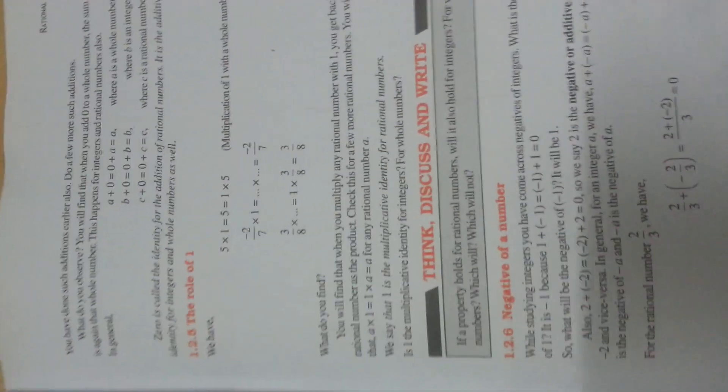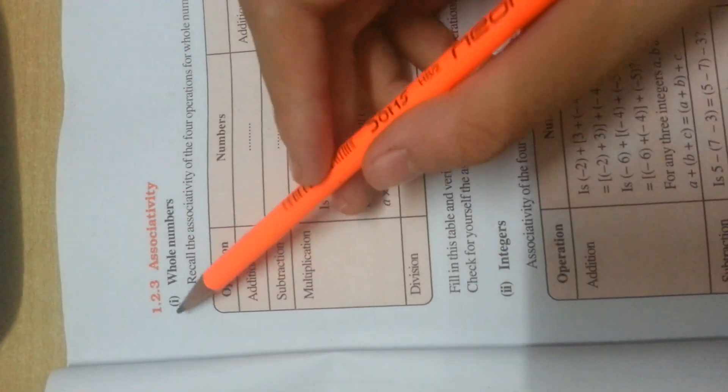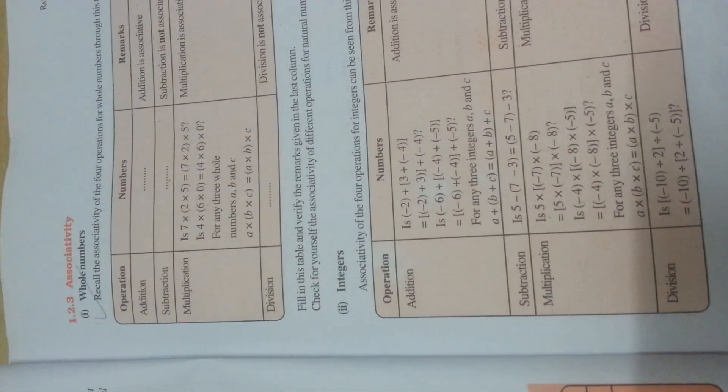You can try to sense how the examples play an important role. Just read the properties like whether associative property is open for division and multiplication. These kind of verification sums come.